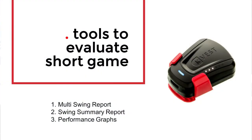The tools you have to evaluate short game are your multi-swing report, your swing summary report, your performance graphs, and now your tiles. You can go through and determine what you're trying to train and then go to the appropriate report or graph.